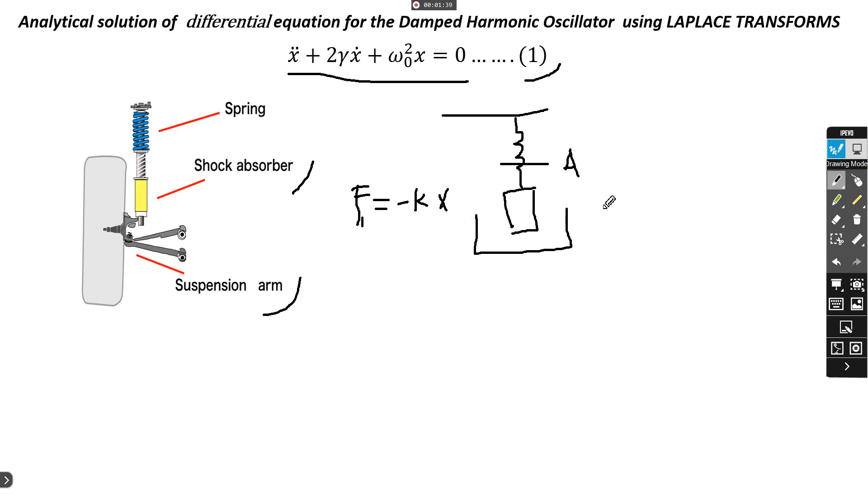Second is damping force F2 equal minus c times x dot, where c is damping constant and x dot is velocity.